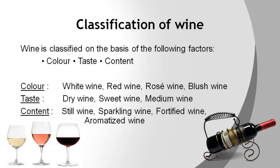Wine can also be classified according to taste. According to taste, wine is classified into dry, medium, and sweet wines. Dry wines are produced when all the sugar is converted to alcohol. Sweet wine is obtained when there is some sugar left after fermentation, stopped either naturally or intentionally by the manufacturer. Medium wines are neither too dry nor too sweet and have traces of sugar left after fermentation.